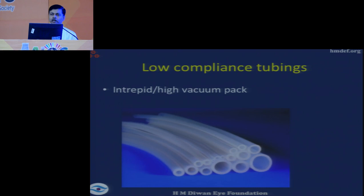The higher-compliance silicone phaco tubes used in the past created more surge, whereas the more rigid PVC pipes are less compliant and therefore produce less surge. So when buying a peristaltic machine, you should check the tubing material — if the tubing is silicone, there will be more surge.